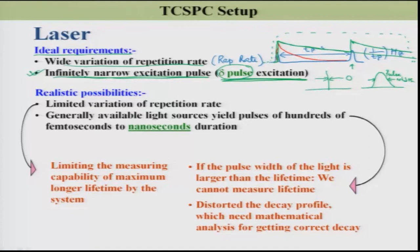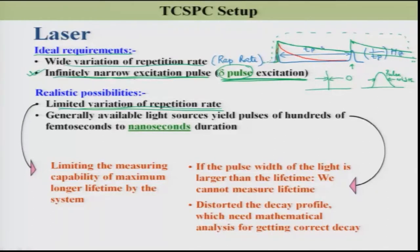But in reality, we always encounter a limited variation of the repetition rate. For a particular laser, the repetition rate is, for example, 1 megahertz — if you wish to change it to 1 kilohertz, it is not possible. Also, the pulse width cannot be generated as a delta pulse; it depends on the laser medium. Sometimes it is nanosecond duration, sometimes 100 femtosecond duration, and you also have picosecond laser pulses. This limited variation of the repetition rate will limit the measuring capability of the maximum longer fluorescence lifetime.